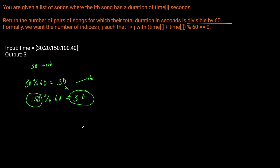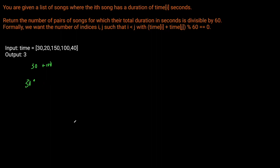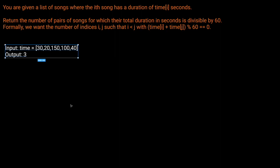So that's the approach we want to take. We're going to use a dictionary to keep track of our remainders — this is a very common pattern on LeetCode. We'll keep a count of pairs initialized to zero, and a dictionary to track those remainders.